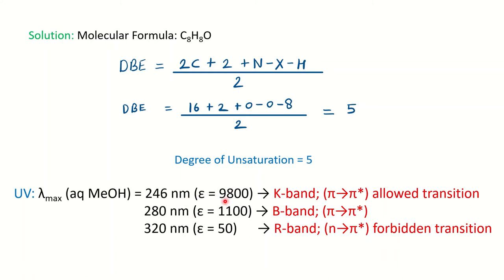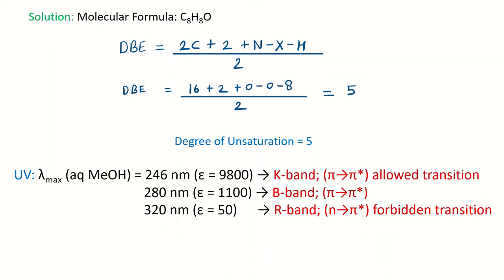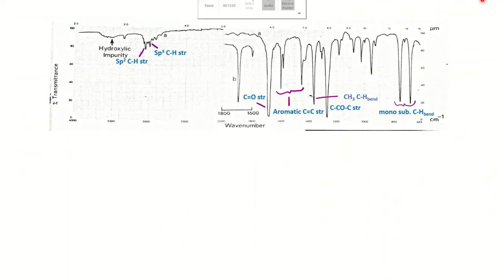From the UV data with a polar solvent: the first intense band is the K band (allowed π→π* transition). A second band at around 1100 epsilon is characteristic of aromatic molecules — called the benzenoid band, appearing at approximately 270–280 nm. The third peak has very weak intensity (10–100 range), indicating a forbidden n→π* transition (R band) at the longest wavelength of the three, since n→π* has the smallest energy gap and wavelength is inversely proportional to energy.